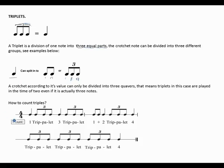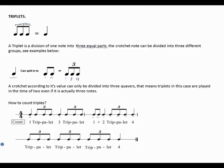How do we count triplets? In a four-four time signature there are four crotchet beats in a bar. Beat one is a crotchet, beat two is divided into three equal notes — which is a triplet — beat three is a crotchet, and beat four is also a triplet. On the next bar, beat one has two quavers counted 'one and two,' beat two is a crotchet, and beat three is a triplet.